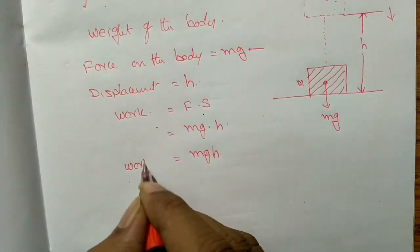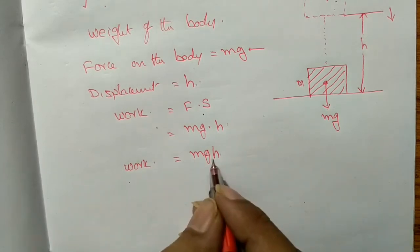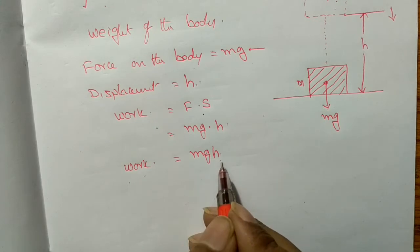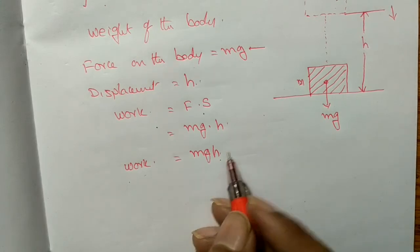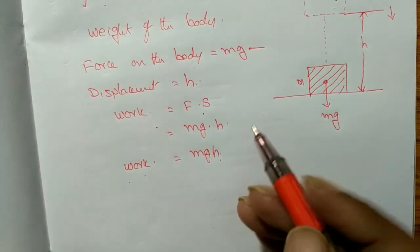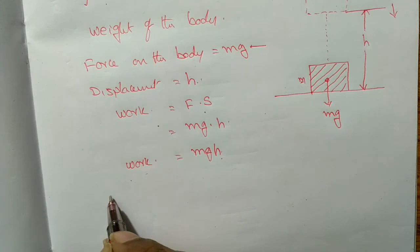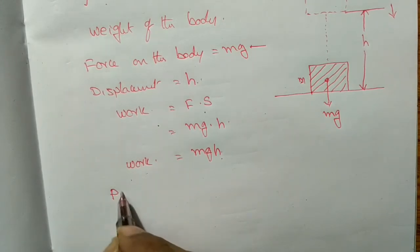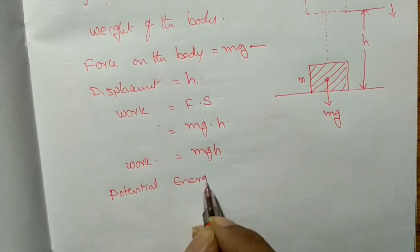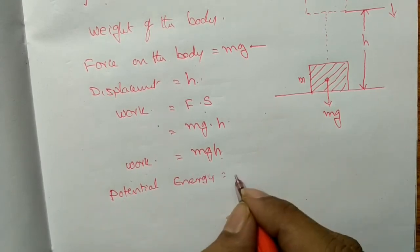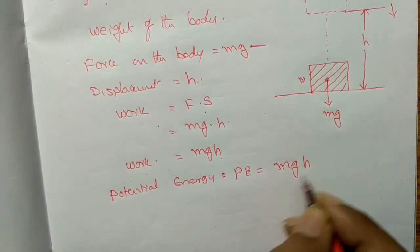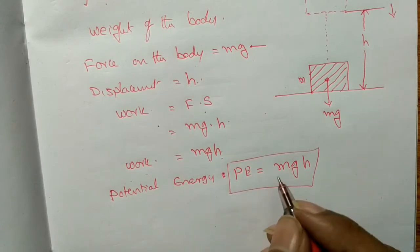The total work done is equal to mgh. This work done is stored as energy inside the body. Therefore, the potential energy P is equal to mgh.